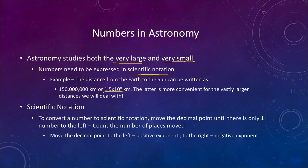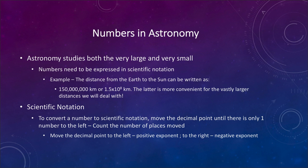In order to convert a number to scientific notation, we move the decimal point until there is only one nonzero number to the left, and we count the number of decimal places that we moved. If we move the decimal point to the left, the exponent is going to be positive. If we move it to the right, the exponent is going to be negative, so the direction that we move it will determine the sign of that exponent.